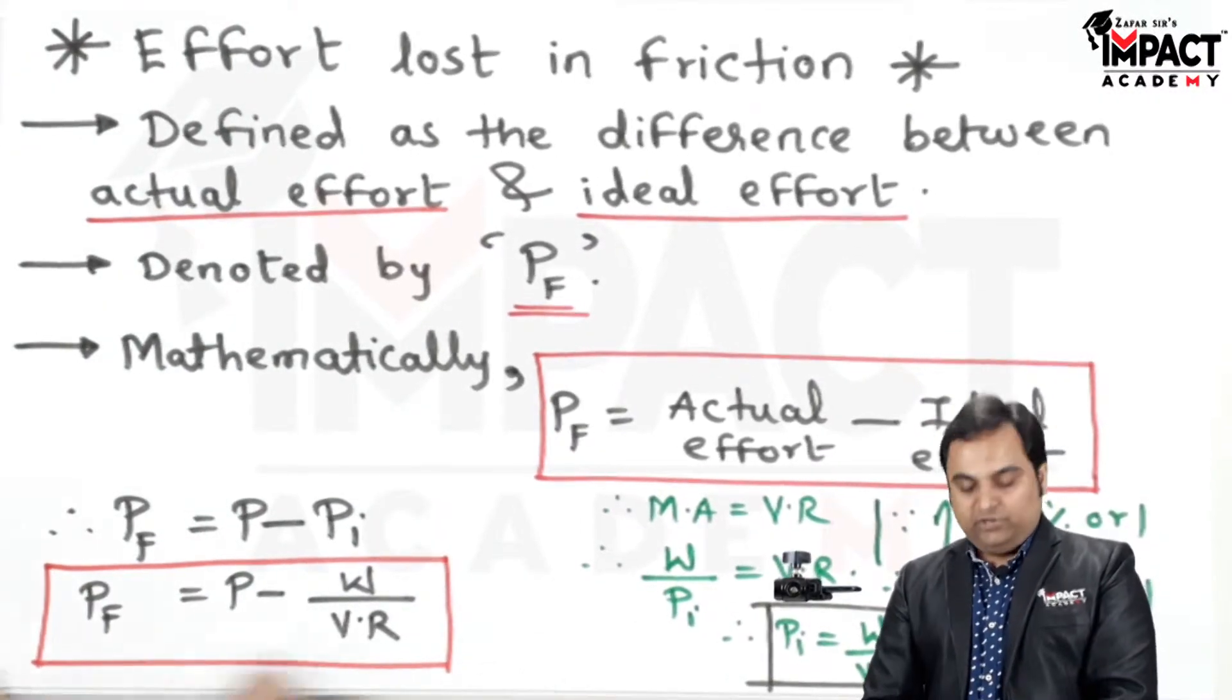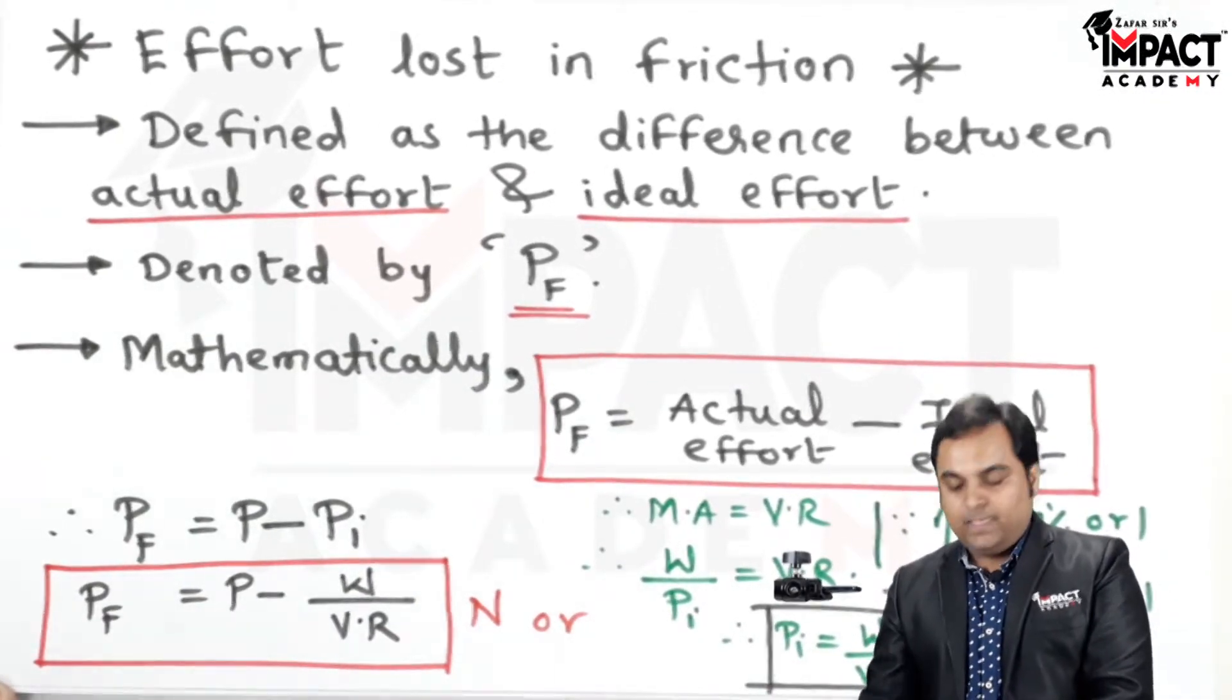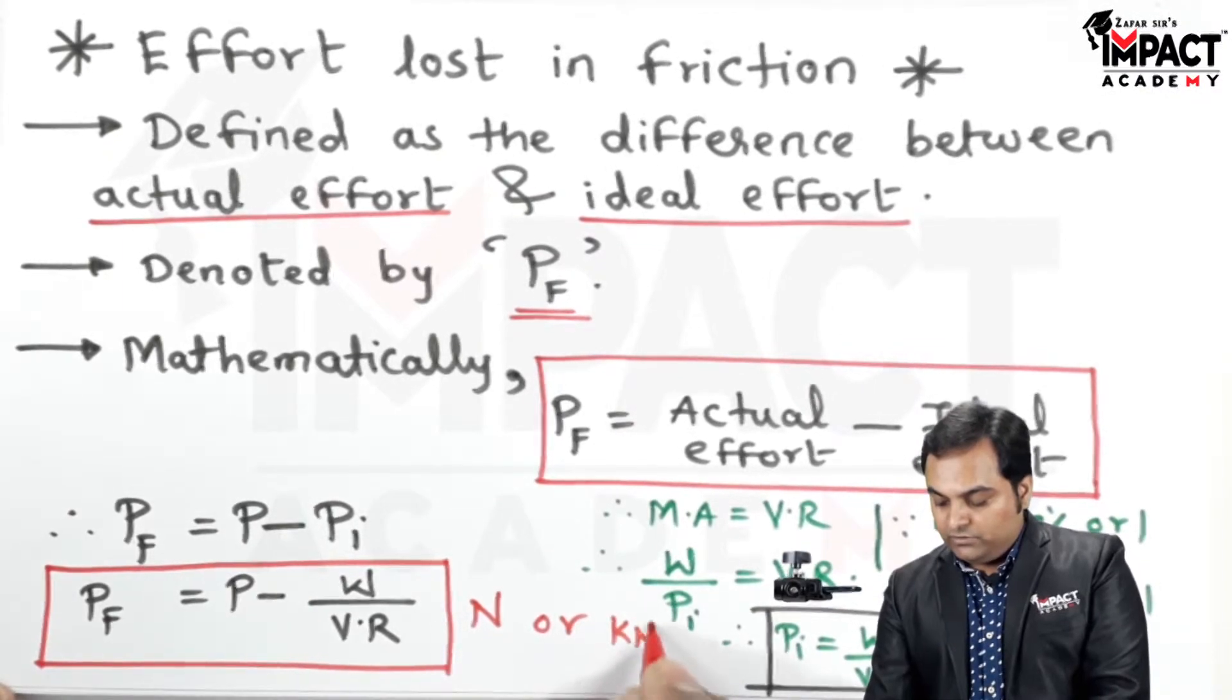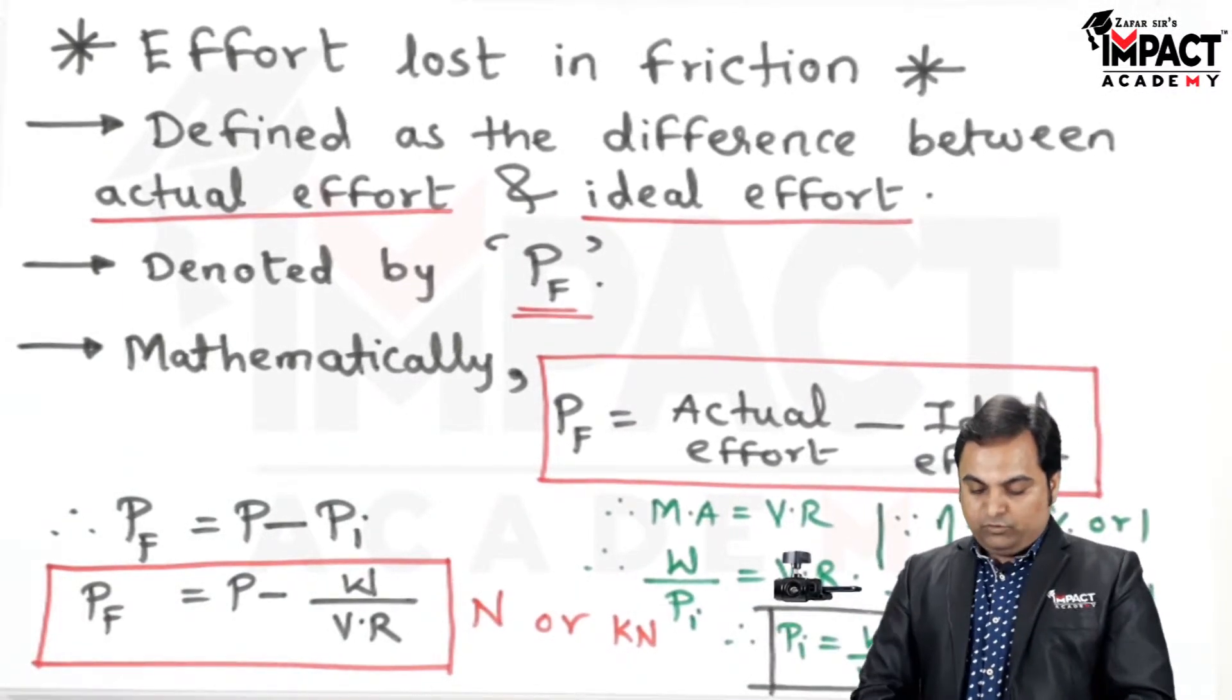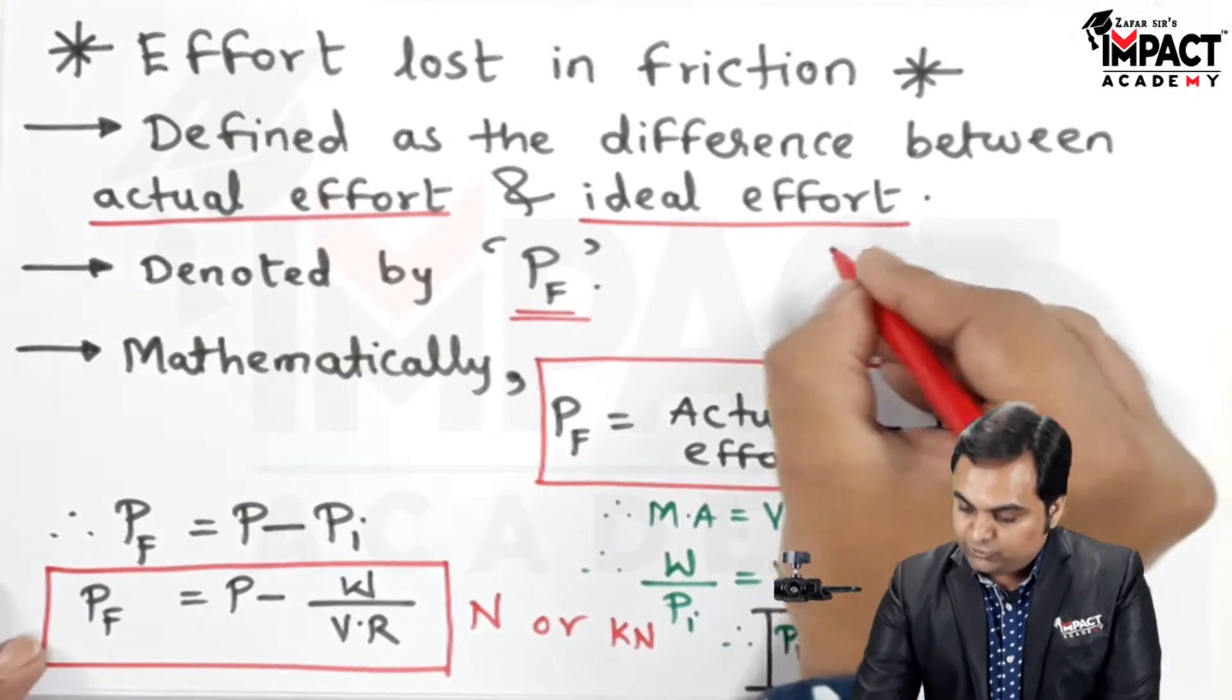So by using this formula we can calculate the effort lost in friction. Unit can be either in terms of Newton or in terms of Kilo Newton. So clearly we can see that when the machine is ideal, this ideal effort value needs to be less.